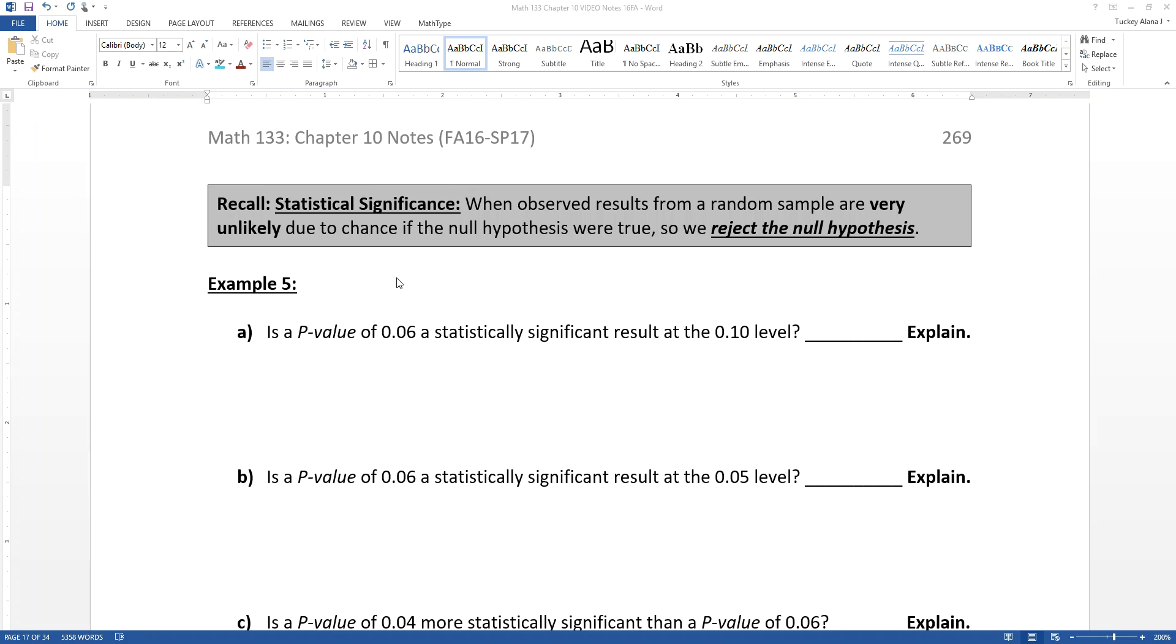So would a p-value of 0.06 be a statistically significant result at the 0.10 level. Level meaning alpha, right? The alpha level. And the answer to this is, well, yes, right?